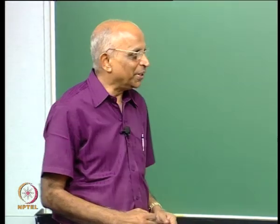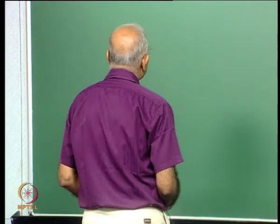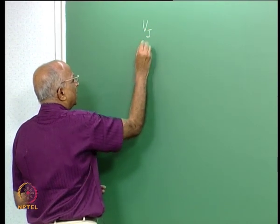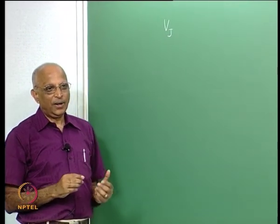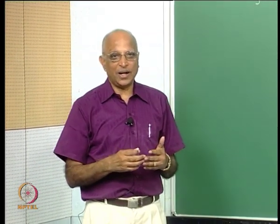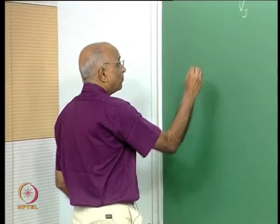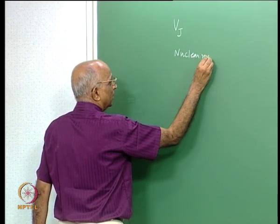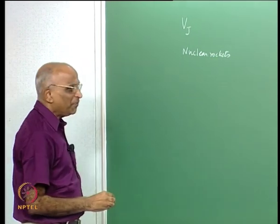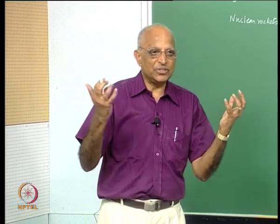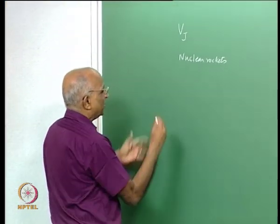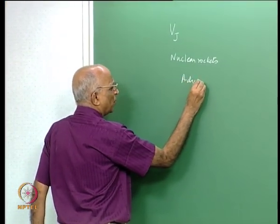Good morning. I think this will be the concluding lecture in this course. In this class, we said Vj must be high. Let us see if there are some limitations to Vj. After looking at this, we will try to see whether there are other possibilities of using nuclear forces for generating thrust, like nuclear rockets, and whether we can use light intensity like photons or deep space energy for developing thrust.